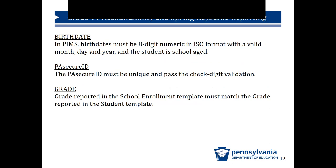A student's birth date must be in the proper format and place the student within school age. For PA Secure IDs, a student should only have one. A PA Secure ID should not be created for a new student without researching the PA Secure ID system for an existing one. Having a unique PA Secure ID enables an automatic match. Students with two IDs or two students sharing one ID should be resolved by contacting the PIMS Helpdesk. Grade must match in both the student template and school enrollment template, and should be reported as the student's grade at the time of testing.